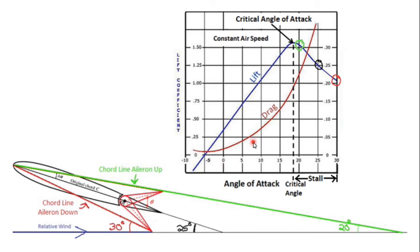Here we have a chart that shows how lift changes with different angles of attack. It shows zero lift at a negative five-degree angle of attack, which tells you it's an asymmetric airfoil, meaning the top and bottom are different. As you increase your angle of attack on the x-axis, lift increases on the y-axis until you reach the critical angle of attack — for this airplane, about 18 degrees — and then if you increase beyond that point, lift starts to decrease again.